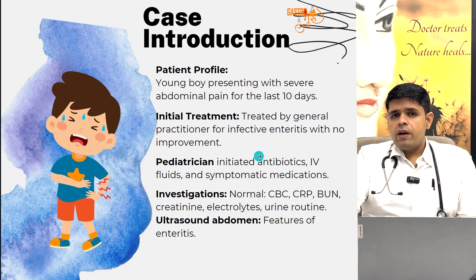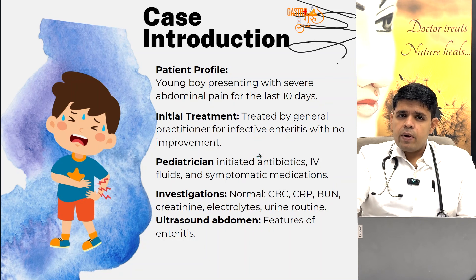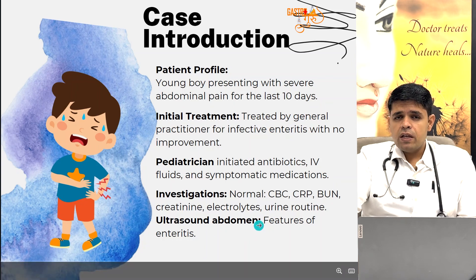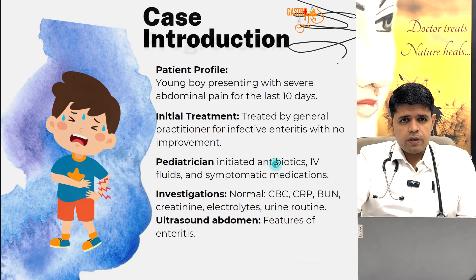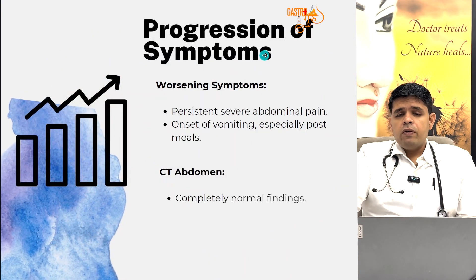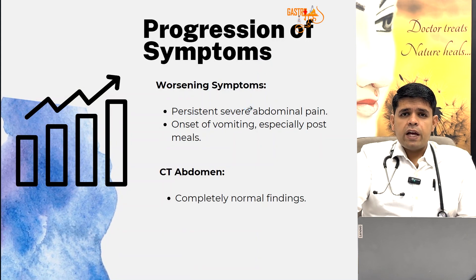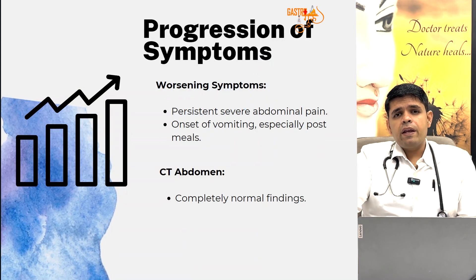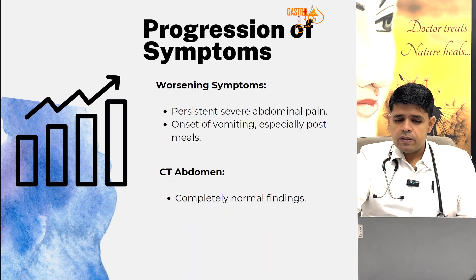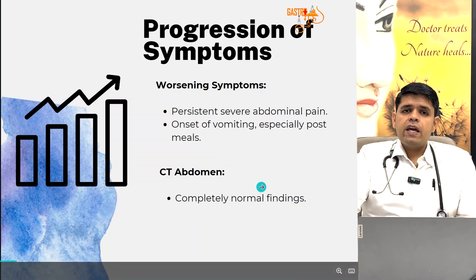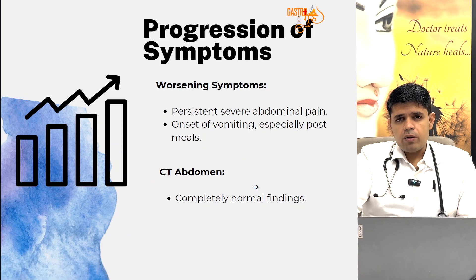Then he went to a pediatrician who changed the antibiotics, continued IV fluids and other symptomatic treatment. Ultrasound was showing features of enteritis. However, all the blood workup and urine workup was normal. There was severe progression of symptoms — the pain of the child kept on increasing, as did the anxiety of the parents. A CT scan was done, but the CT was completely normal.